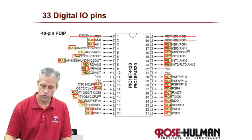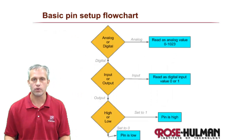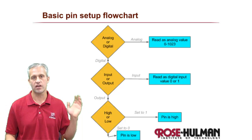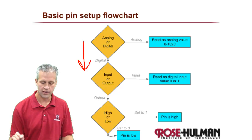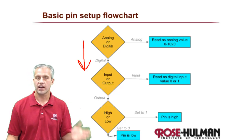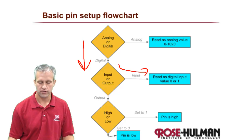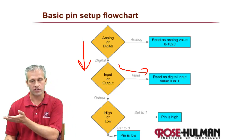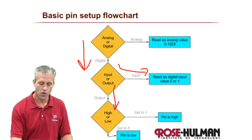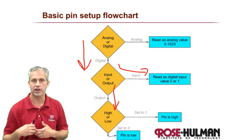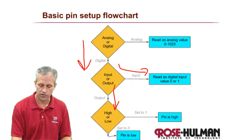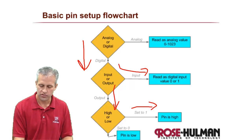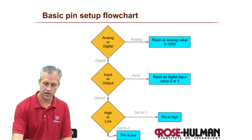The way you use them is you have to decide first and foremost: is this going to be analog or digital? For the things we care about in this video lecture, digital. Once you decide it's going to be GPIO, is it going to be an input — connected to a switch or something — or is it an output, controlling a motor, an LED, or an LCD? If it's an output and you set it to 1, it's high; set it to 0 and it's low.